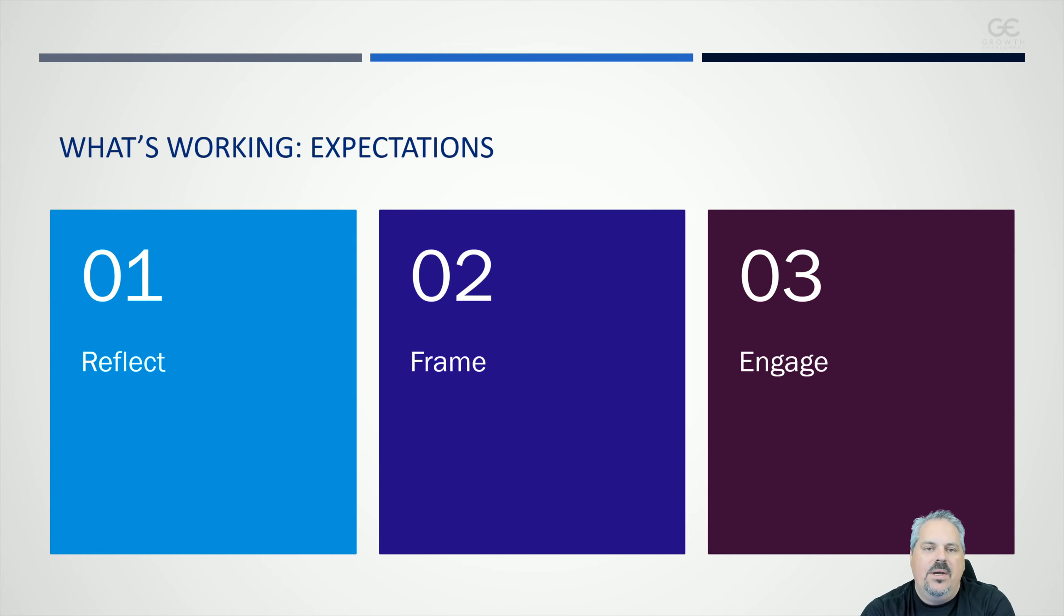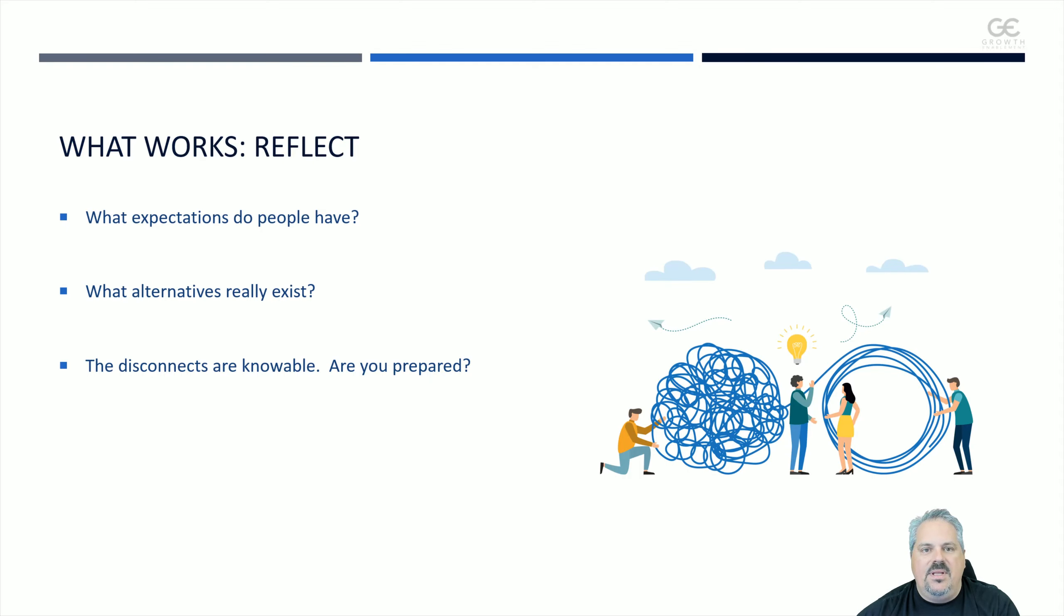So what's working on our team when we talk about confronting expectations or leveraging expectations to move us forward? The first thing is reflection, getting a fresh perspective. The second is framing out what's really happening and asking the right questions. And the third is actually engaging. There's a whole different perspective when you engage and the expectations you have when you're engaging or put on the hook to produce something are completely different than when you're providing feedback.